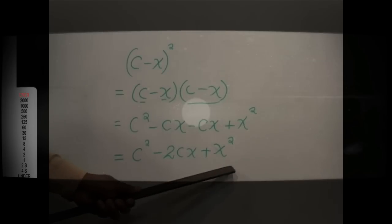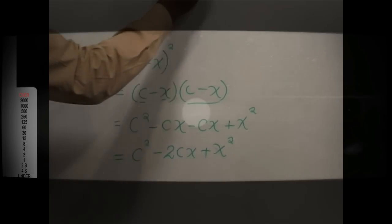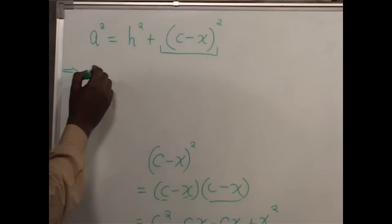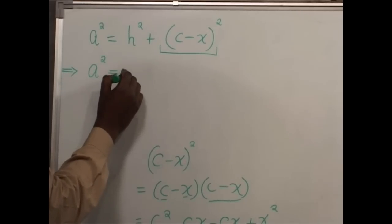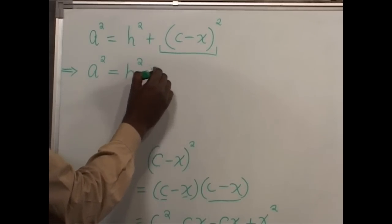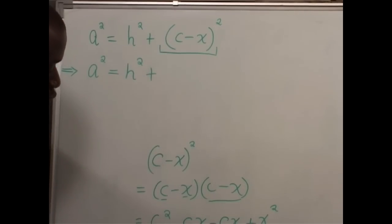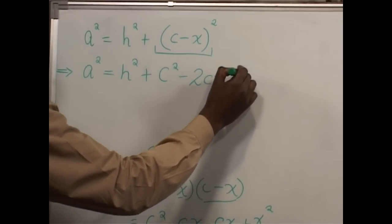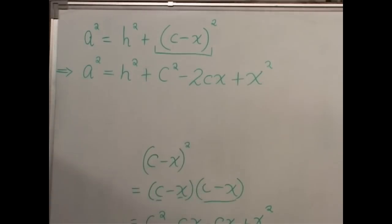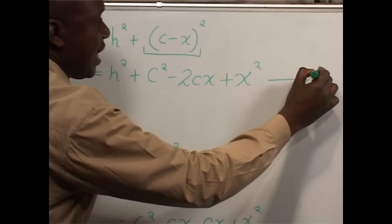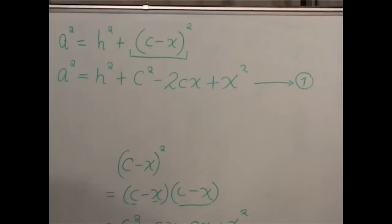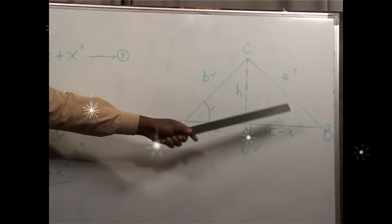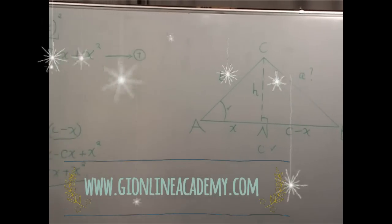This expansion is what we replace in that position, so our equation becomes: A squared equals H squared plus C squared minus 2CX plus X squared. We are going to reserve this equation and label it as equation number 1. We have made use of the details in triangle CBN and came up with this relationship as a result of the Pythagoras theorem.